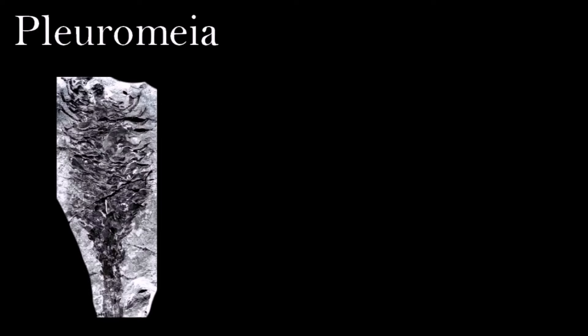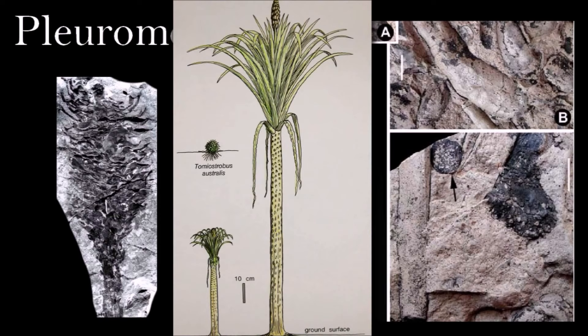At the beginning of the Triassic, Earth's vegetation was emerging from the greatest of all mass extinctions. Many plants died out, but Pleuromeia benefited from the catastrophic change. Fossils show that it grew right across the world, appearing in a wide variety of different habitats left vacant by the disappearance of competing plants. Pleuromeia belonged to the lycophytes, a group that included the giant clubmosses that formed the coal swamps of the Carboniferous period. Although Pleuromeia was a tree, it was built on a smaller scale.